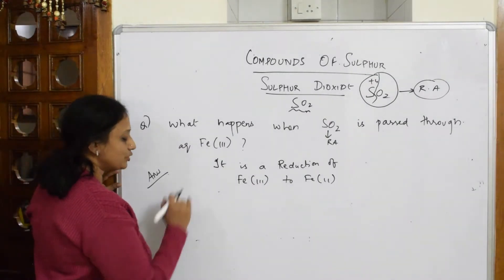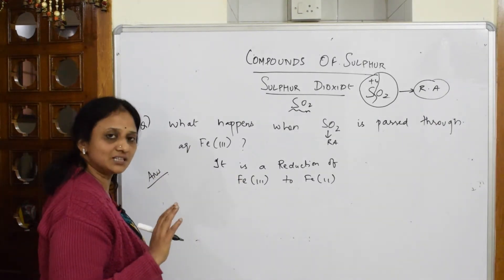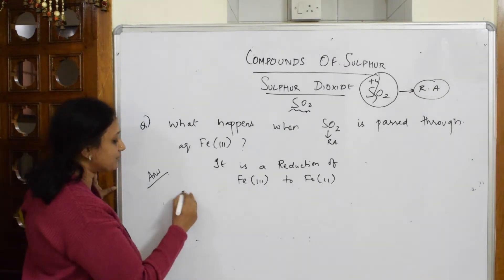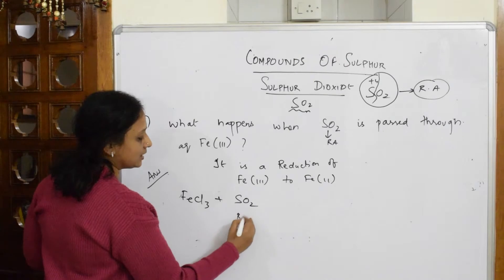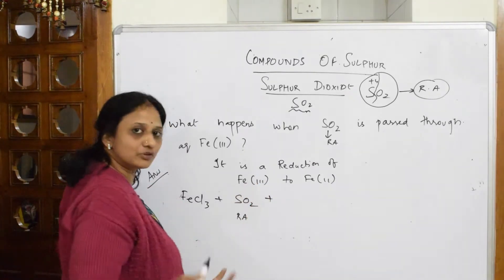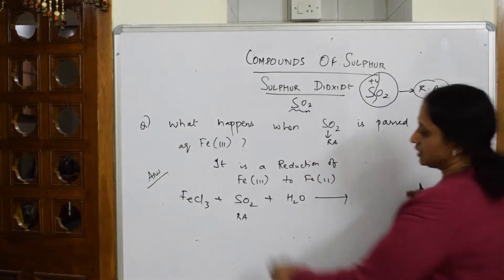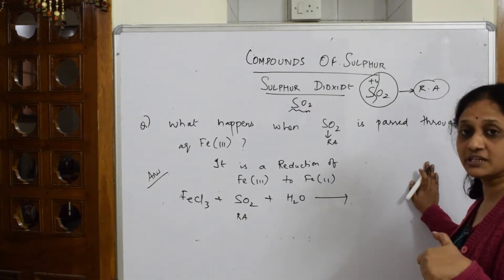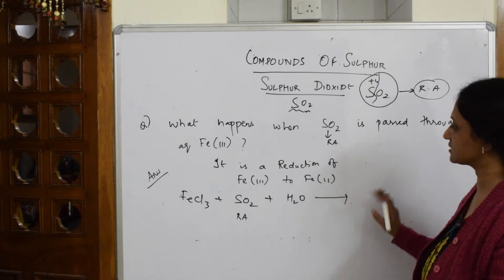We will first write the complete reaction, then the ionic reaction. Fe³⁺ is ferric and Fe²⁺ is ferrous. So I take ferric chloride, FeCl₃, and add sulfur dioxide — which is acting as a reducing agent — along with water, since ionic means ions form in aqueous solution.